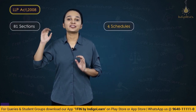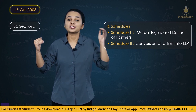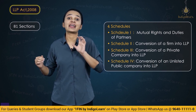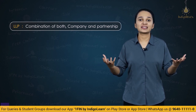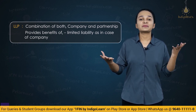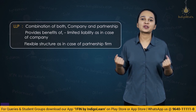Let us quickly summarize the LLP Act 2008. The LLP Act 2008 contains 81 sections and 4 schedules. The first schedule talks about mutual rights and duties of partners, the second schedule covers conversion of a firm into LLP, the third schedule covers conversion of a private company into LLP. LLP is a combination of both company and partnership forms of organization — it provides the benefit of limited liability as in a company and flexible structure as in a partnership. It is a hybrid of corporate and partnership structure.